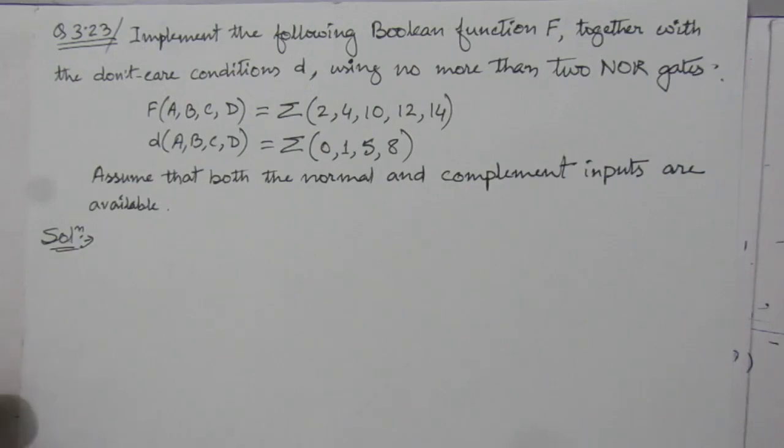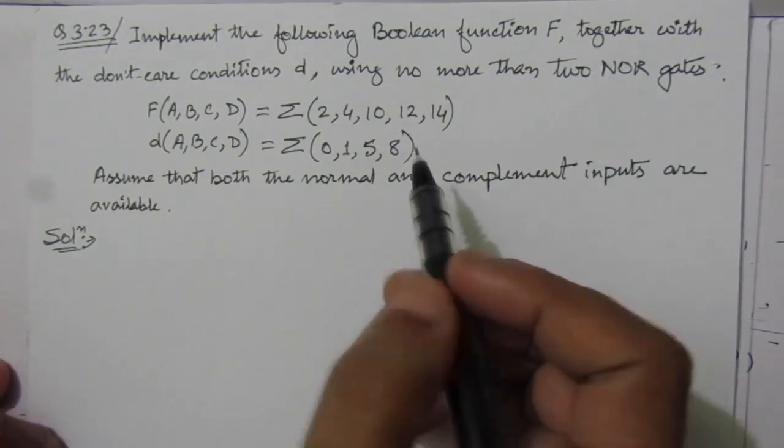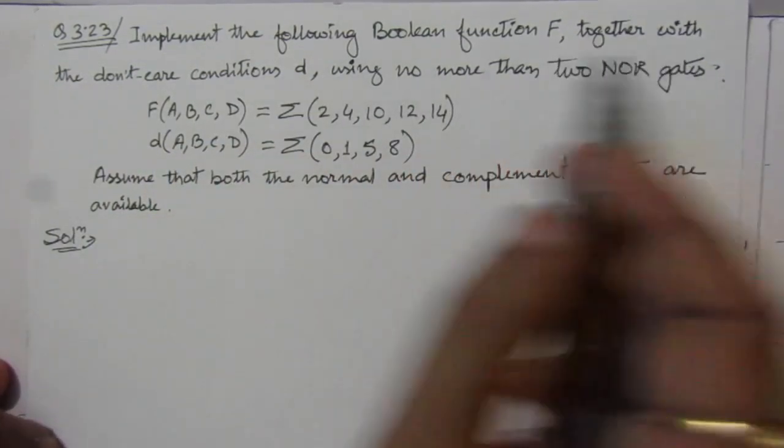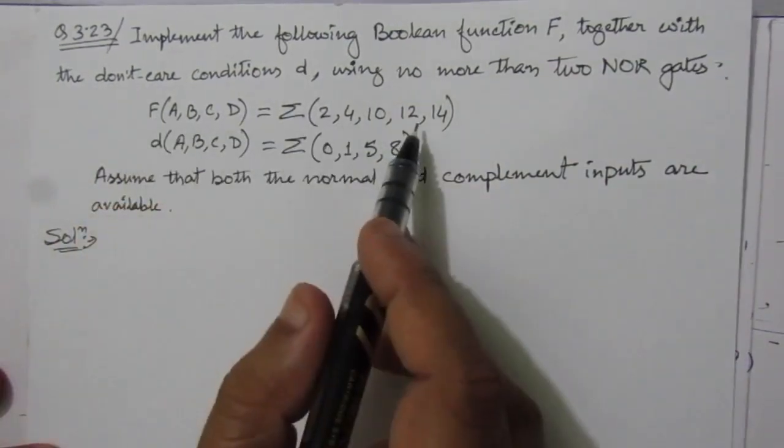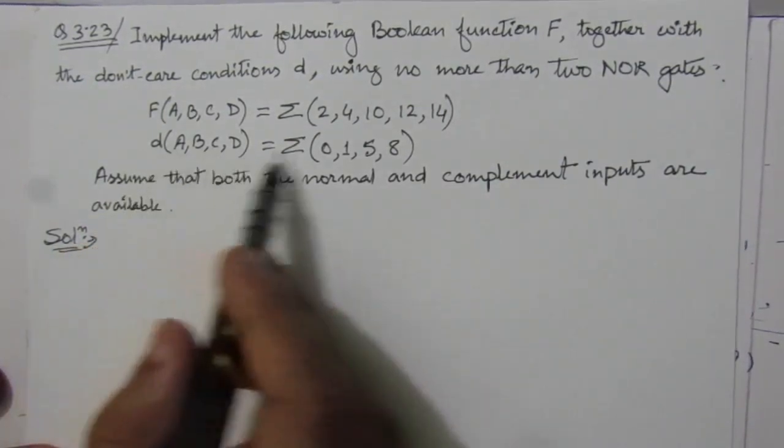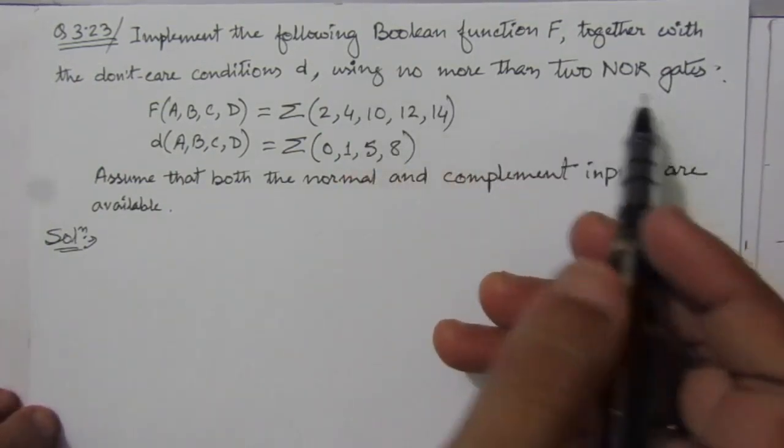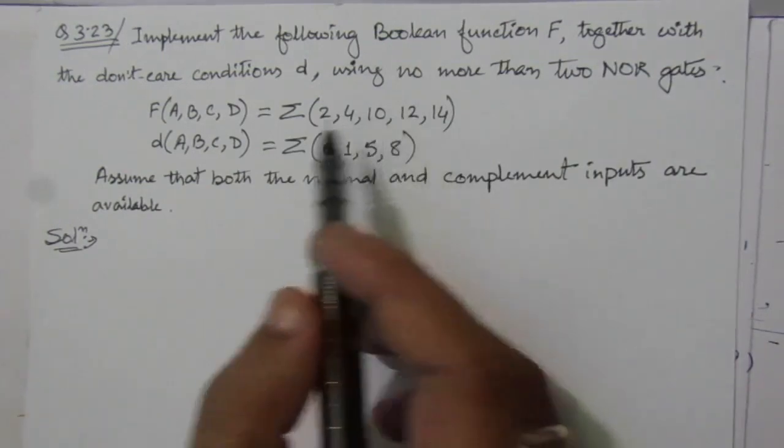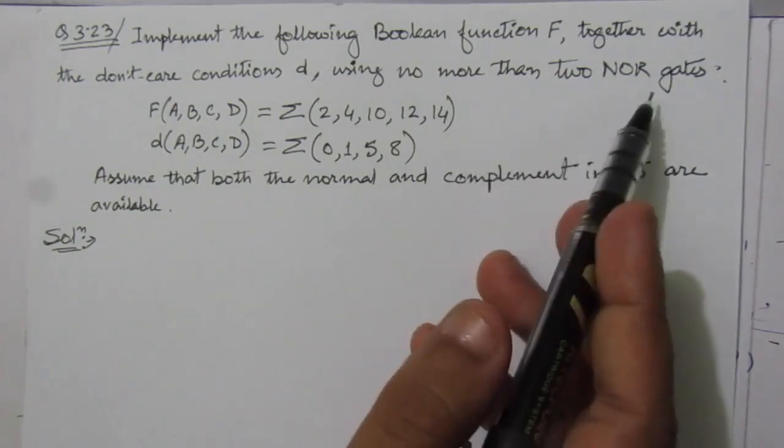In this video, I am solving problem number 3.23 from chapter 3. The problem is: implement the following Boolean function F together with the don't-care conditions d. We are given a function F and a function d for the don't-care conditions, using no more than two NOR gates.